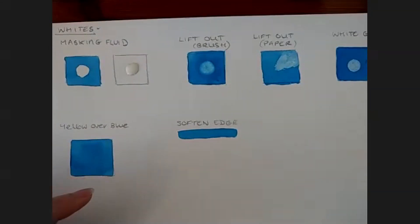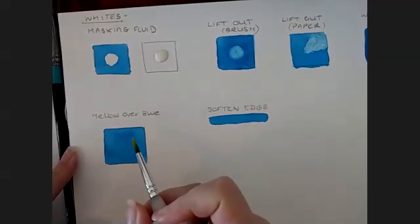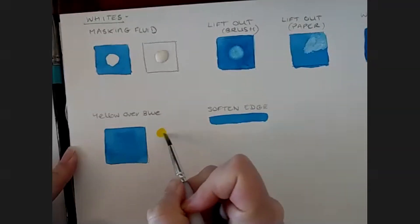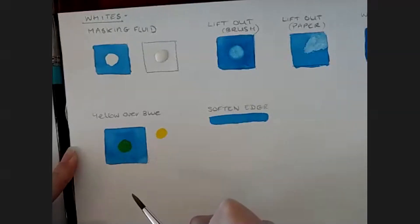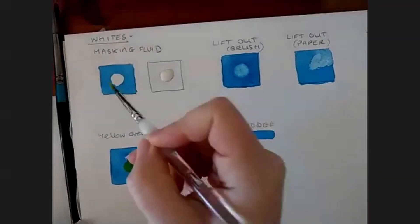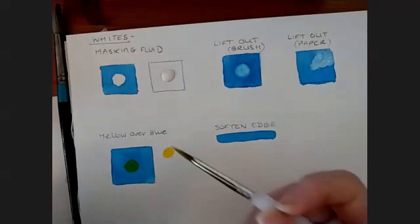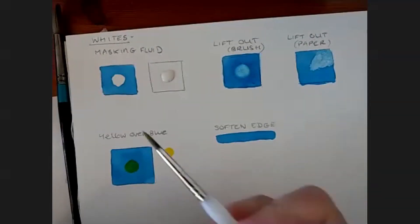I'll just show you quickly. If we wanted to paint a yellow sun over a blue sky, this is what would happen if we tried to just paint it over the top. So probably a lot of you know already, but just in case you didn't. So a bit of yellow, yellow paint looks like that over your white paper. On this though, you can see it just shows that blue underneath. So the only way to do it is to mask it off or lift out and then paint your yellow in there first.